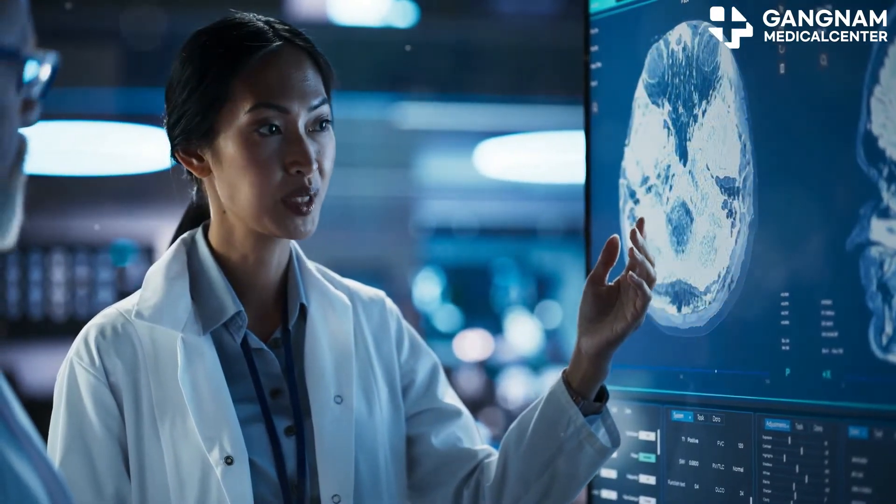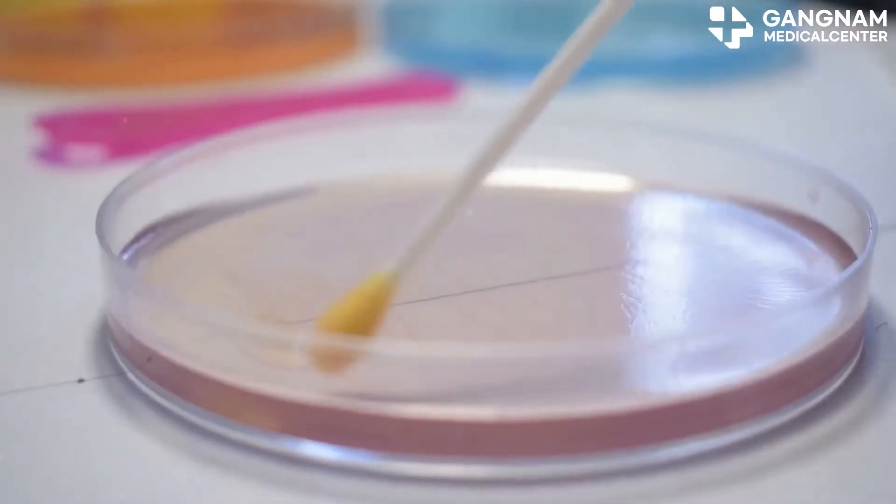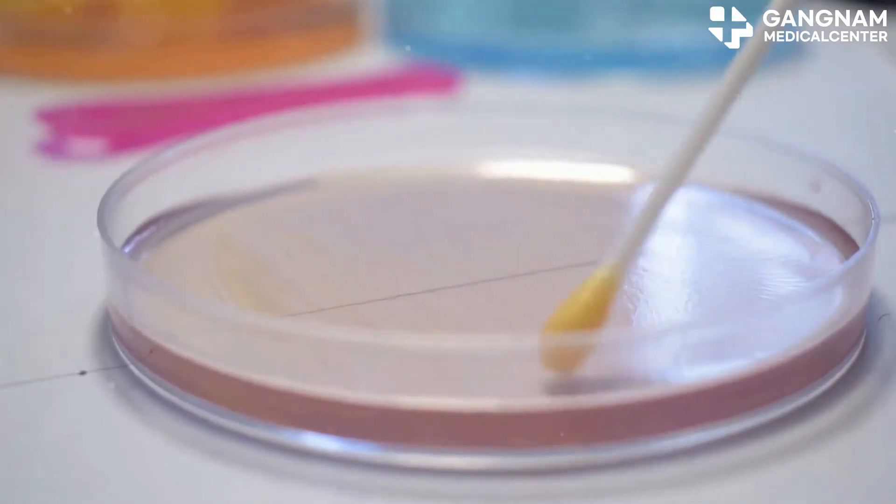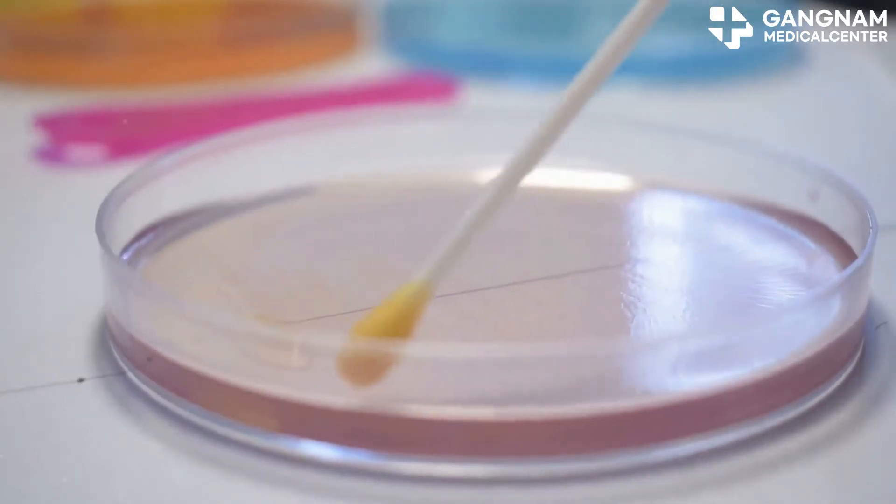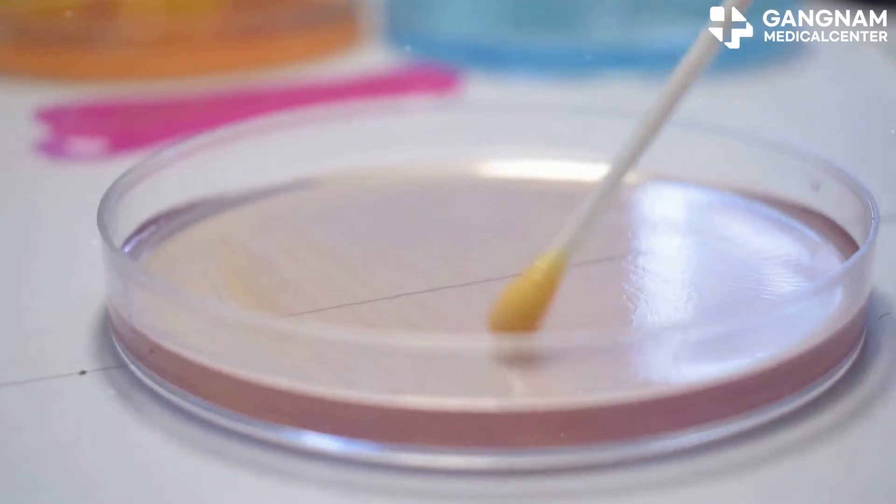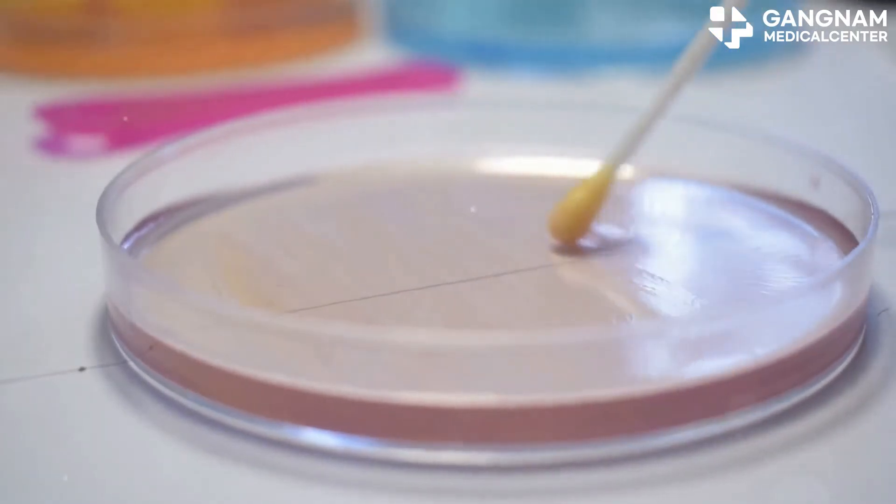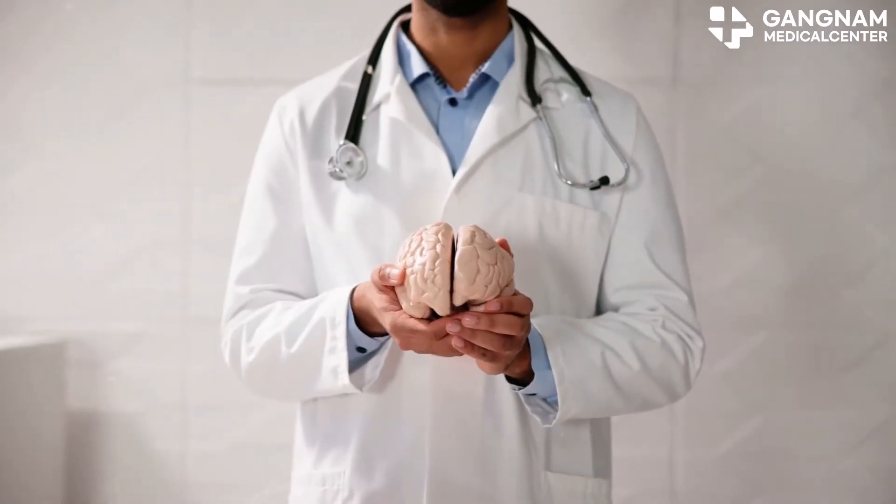Now, on to neuroprotective action. Stem cells can secrete various growth factors that protect nerve cells. These factors support the survival and function of nerve cells, promoting overall brain health. Think of it like giving your brain a protective shield.